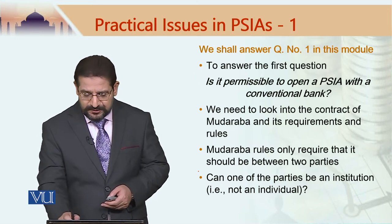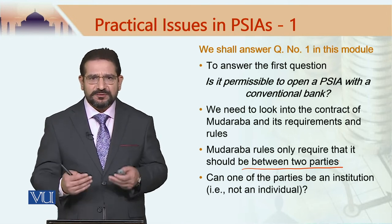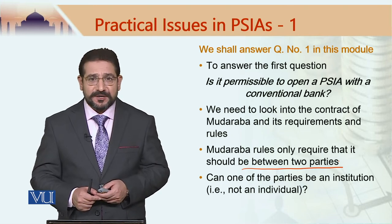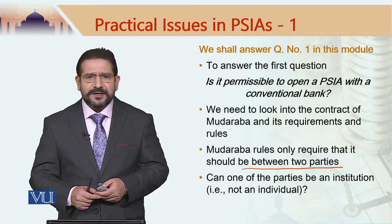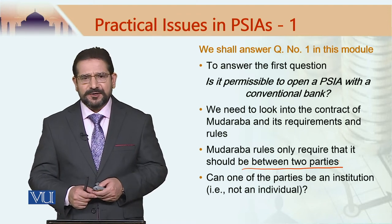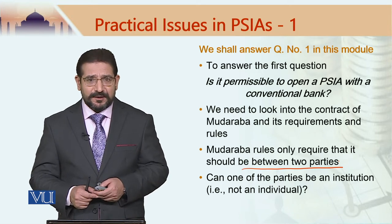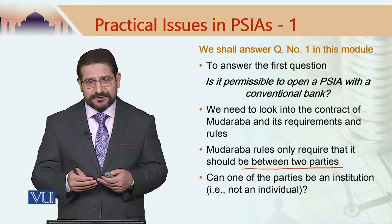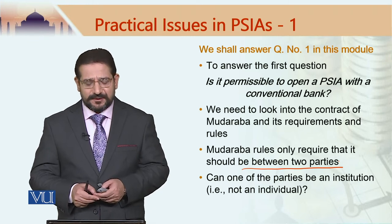Mudaraba rules require that it should be between two parties. One party provides capital — this party is known as Rabbul Maal — and the other party does the business. Now, can one of these parties be an institution? Can the Rabbul Maal, the capital provider, be an institution rather than an individual? Or the other way around, can the party receiving the funds and doing the business be an institution rather than an individual?